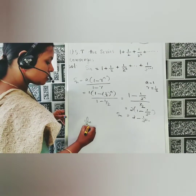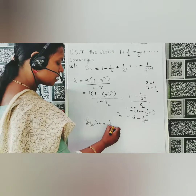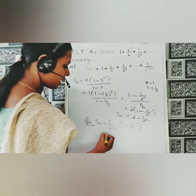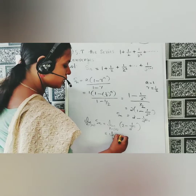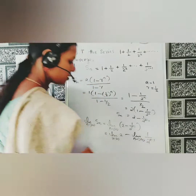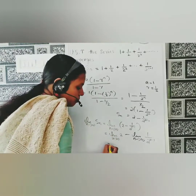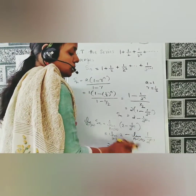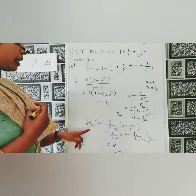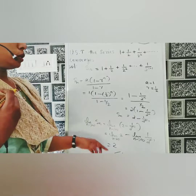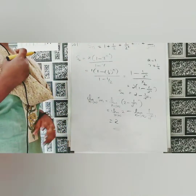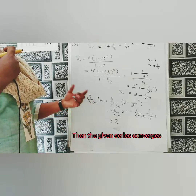Now, limit n tends to infinity of s_n = limit n to infinity of (2 - 1/2^(n-1)) = 2 - 0 = 2. We get limit n to infinity of s_n equals 2, which is a finite value. Therefore the partial sum converges, and the series 1 + 1/2 + 1/2² + ... converges with convergence value 2.